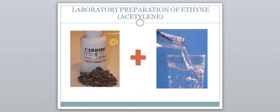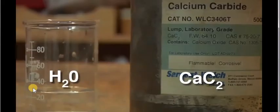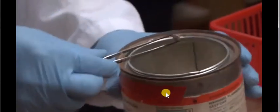Now this is the lab preparation of ethyne. The reactants are calcium carbide and water — when these two react, they form ethyne gas. Ethyne is also known as acetylene, and the triple bond is also called the acetylenic bond, which is the origin of that name. Let's look at how ethyne gas is prepared in the lab.